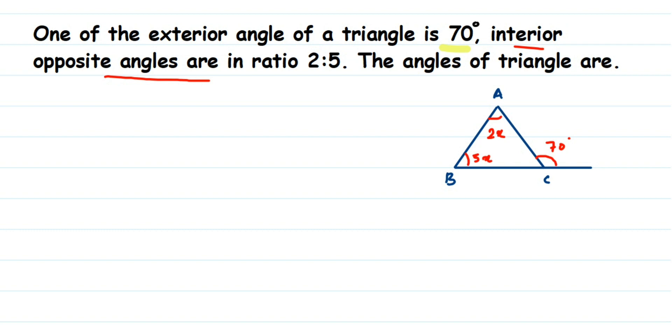So let us assume that first. So let two interior opposite angles be 2x and 5x. And you would have also learned a rule,